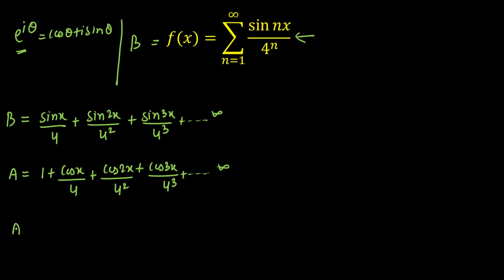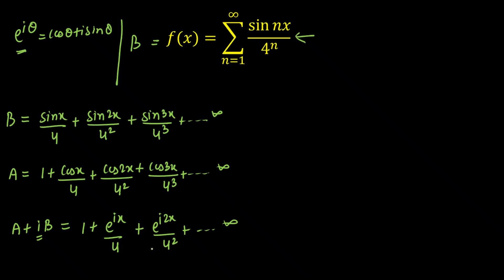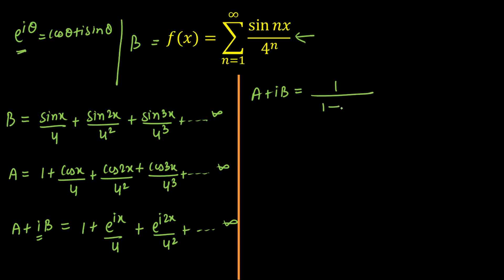I'm going to write this as a plus iota b. So a plus iota b will be converted as 1 plus [cos(x) + i·sin(x)]/4 plus e^(i·2x)/4² plus this series goes on up to infinity. Now applying the infinite GP formula, we get a plus iota b equal to the first term upon 1 minus the common ratio, where the common ratio is e^(ix)/4.